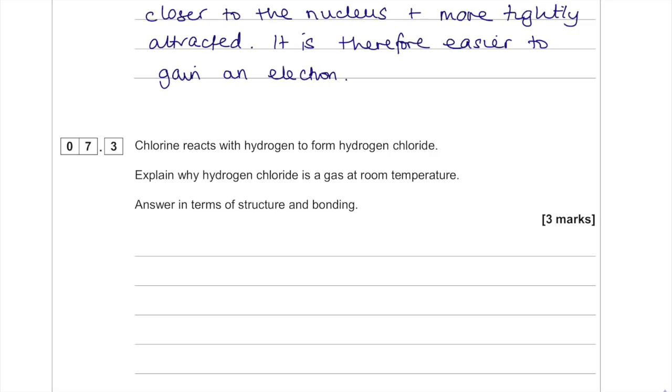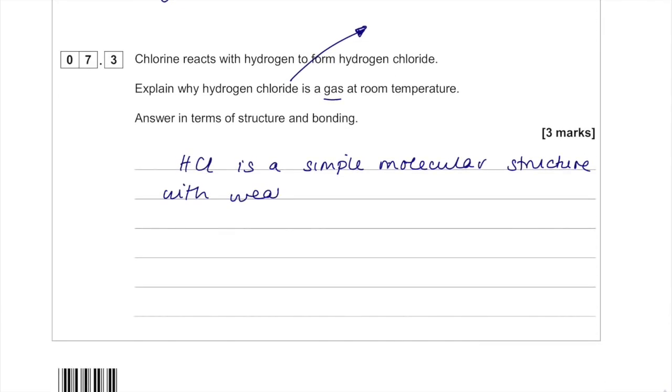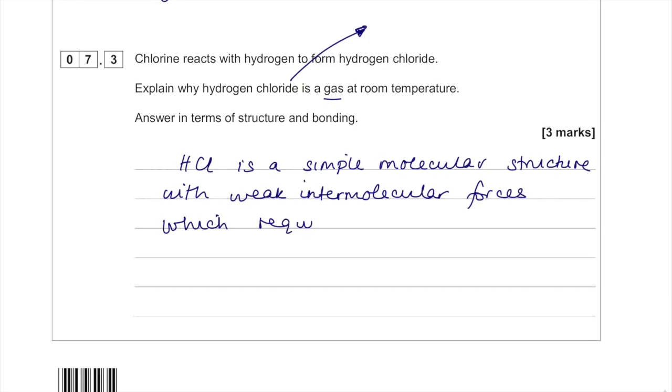Chlorine reacts with hydrogen to form hydrogen chloride. Explain why hydrogen chloride is a gas at room temperature. Answer in terms of structure and bonding. The fact that it's a gas means it's a simple molecular structure. HCl is a simple molecular structure with weak intermolecular forces which require little energy to break. So always state the amount of energy needed to break the forces.